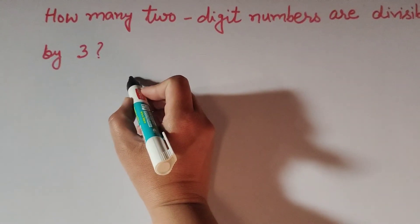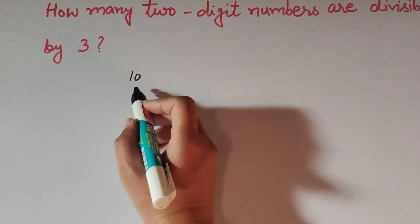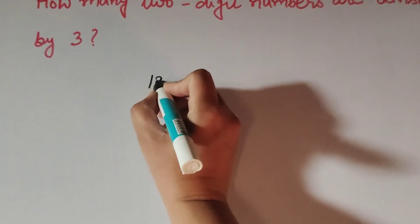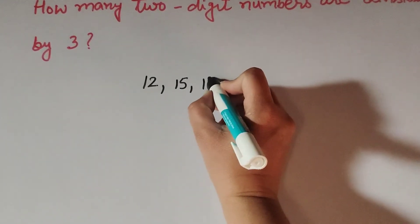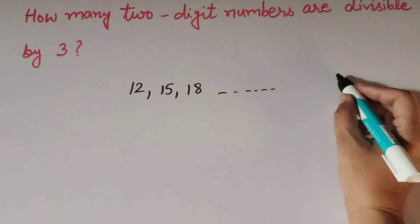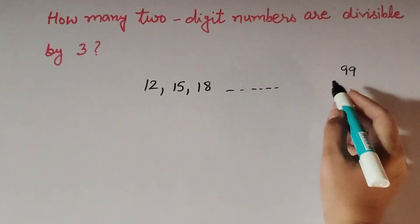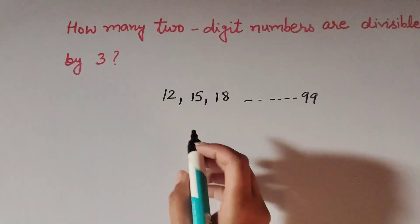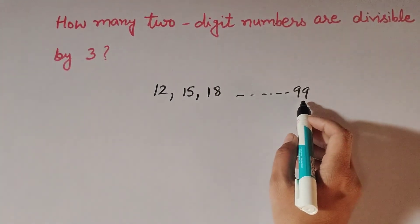The smallest two-digit number is 10, but 10 is not divisible by 3. The smallest two-digit number divisible by 3 is 12. Then 15, then 18, and so on. The last two-digit number divisible by 3 is 99. So this forms an AP: 12, 15, 18, ... and the last term is 99.